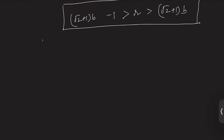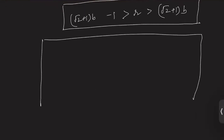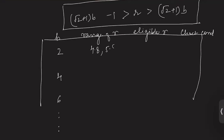We will create a table with different values of b, the range of r, the eligible r, and check the condition. Checking b equals to two gives the range 4.8 to 5.8, so the eligible r is 5. However, the condition does not hold true, so we reject this solution.